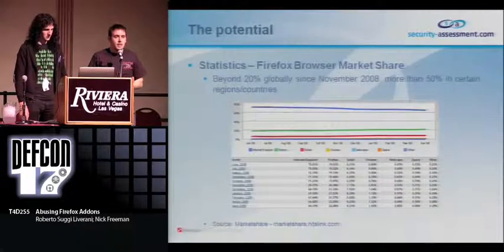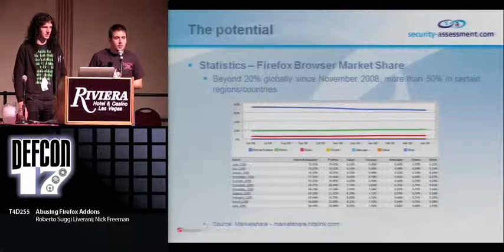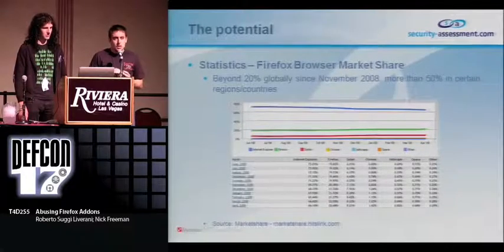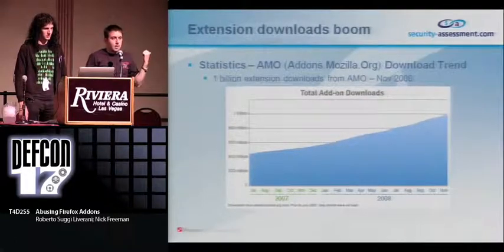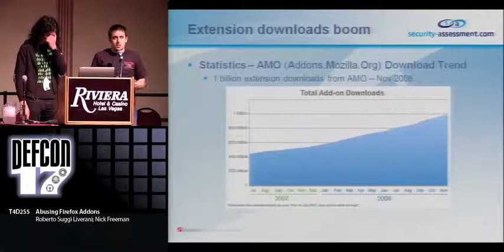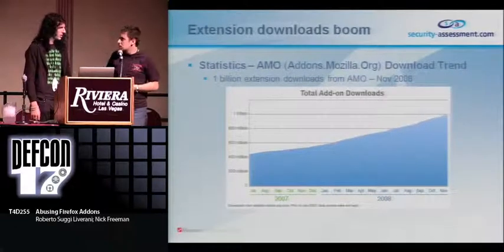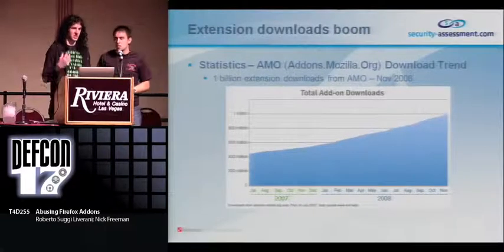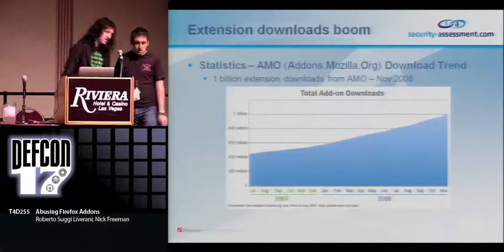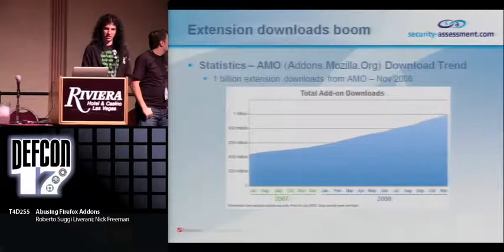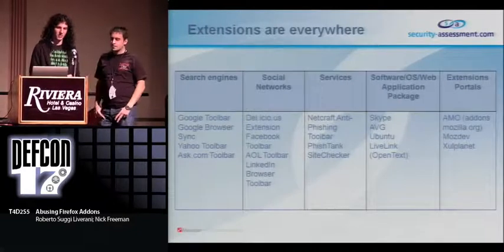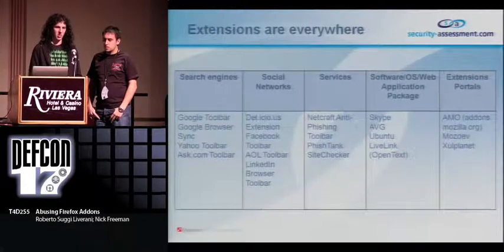Firefox is getting 50% of the browser market share in some countries like Africa and Asia, and globally it's still 20%, but the trend is increasing. In terms of extensions downloadable from addons.mozilla.org, the trend is increasing — in November 2008 it was one billion downloads, and it's now up to about 1.5 billion. This doesn't include extra add-ons you can get from software packages like Skype, AVG, or social networks.